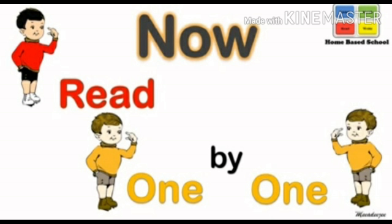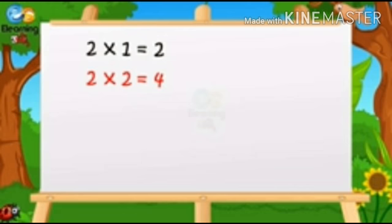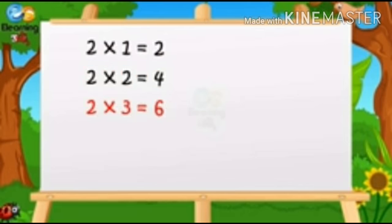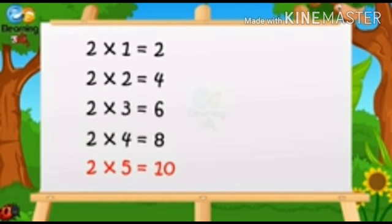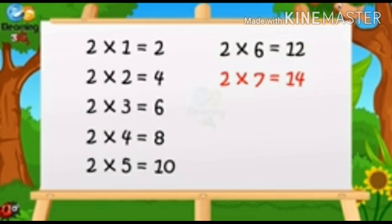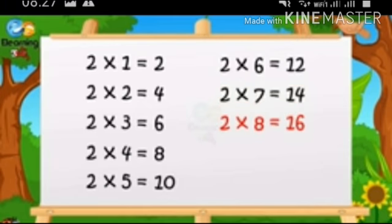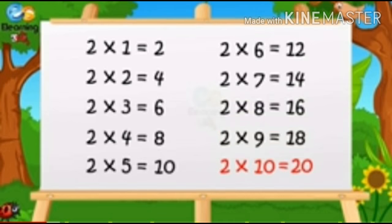Now read 1 by 1. 2 1s are 2, 2 2s are 4, 2 3s are 6, 2 4s are 8, 2 5s are 10, 2 6s are 12, 2 7s are 14, 2 8s are 16, 2 9s are 18, 2 10s are 20.